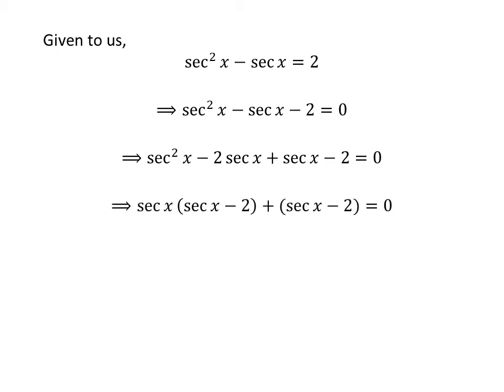Taking out the common factor secant of x in the first two terms gives us: secant of x times (secant of x minus 2) plus (secant of x minus 2) is equal to 0. Now, taking out the common factor (secant of x minus 2) gives us: (secant of x minus 2)(secant of x plus 1) is equal to 0.